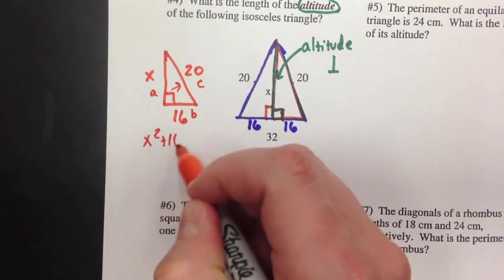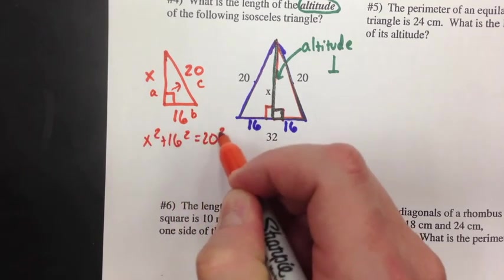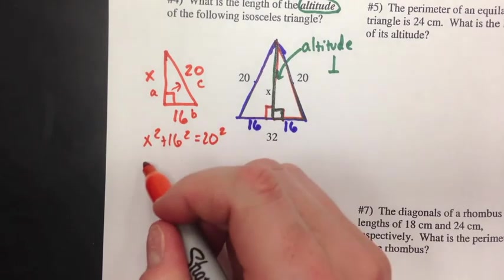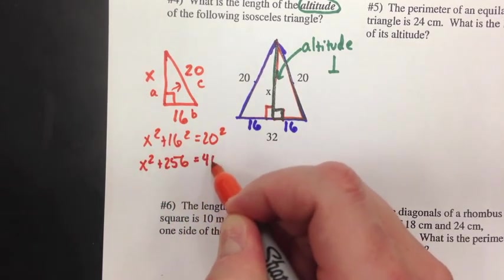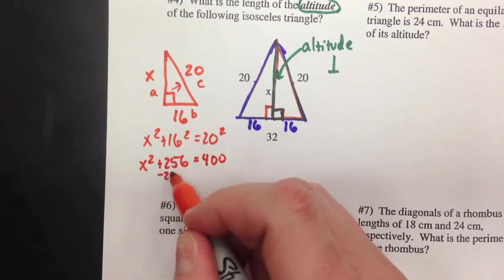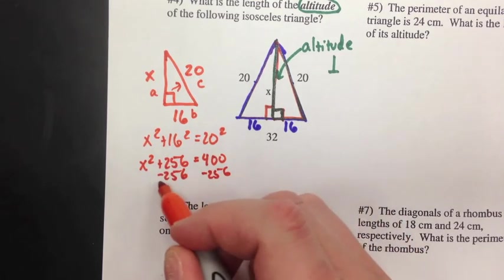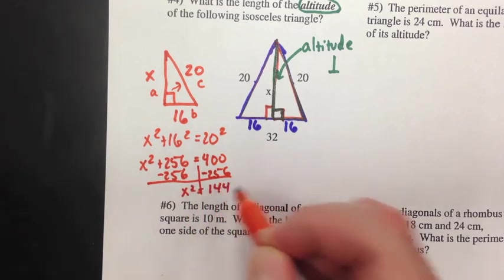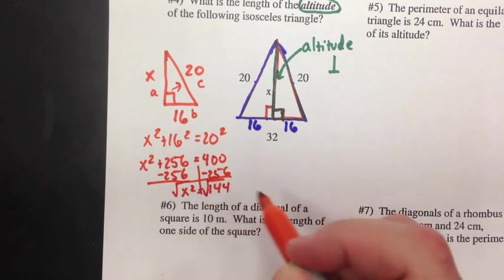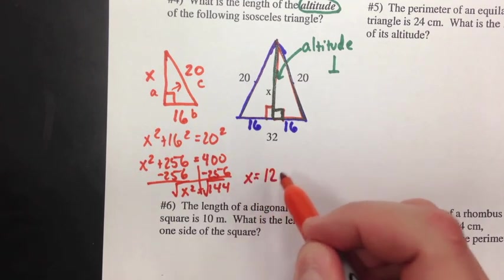So, we can say X squared plus 16 squared equals 20 squared. Now, you solve it. So, we got X squared plus 256 is equal to 400. We'll subtract 256. And, we get X squared equals 144. All right, we just dealt with this. Take the square root of both sides. X is equal to 12.